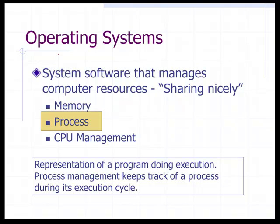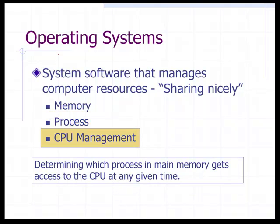A process is a representation of a program doing its execution, and the operating system manages and keeps track of the process during the execution cycle. A process is simply clicking on Word, PowerPoint, Excel, or anything like that. CPU management determines which process in main memory gets access to the CPU at any given time.